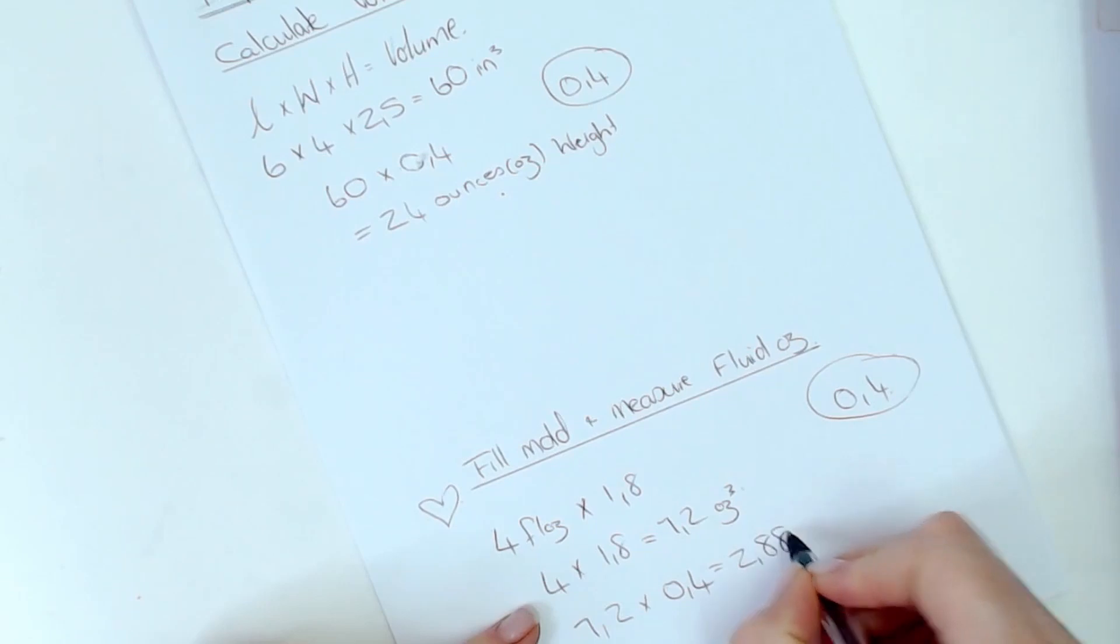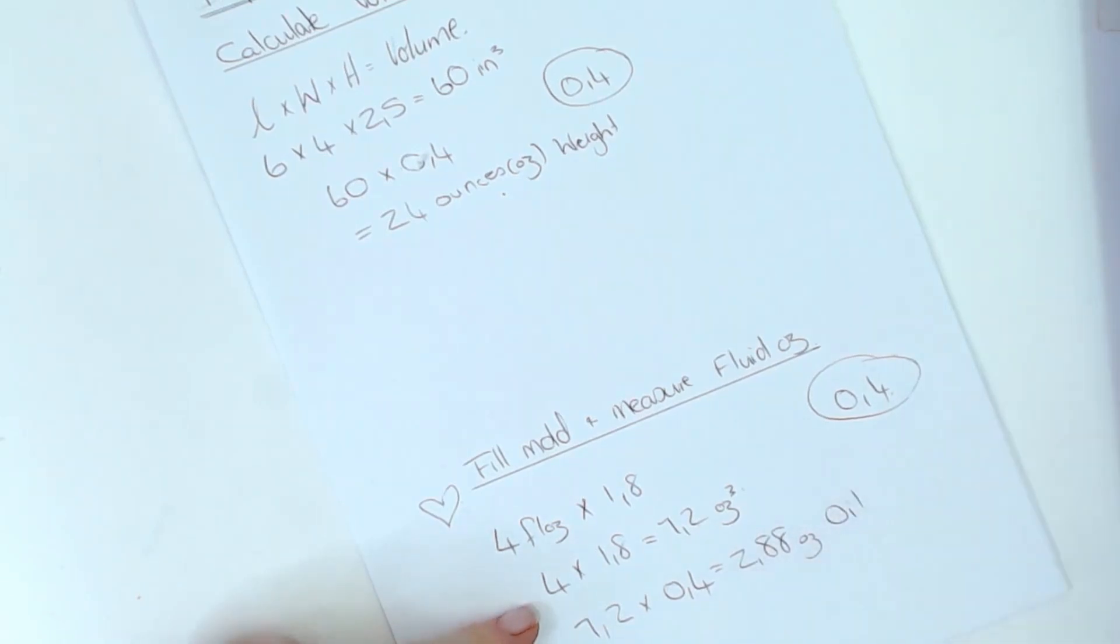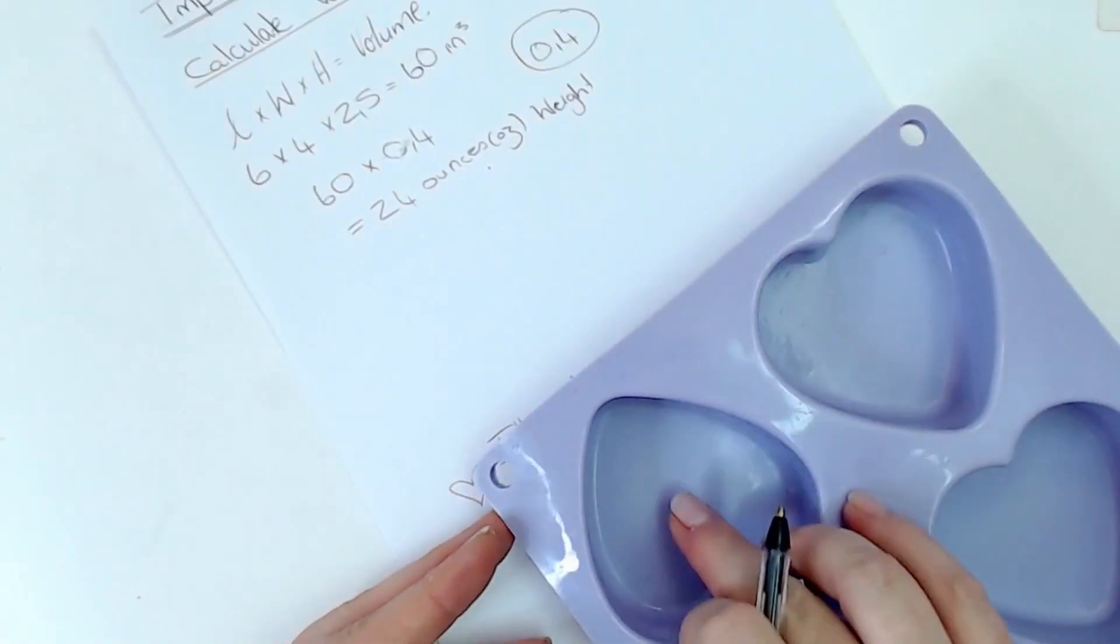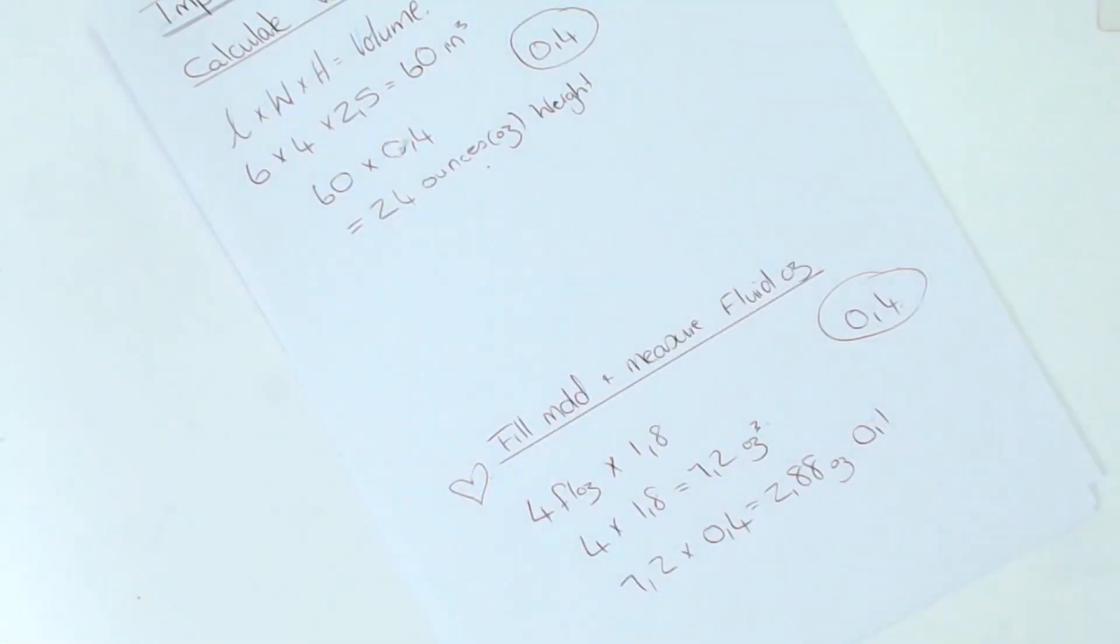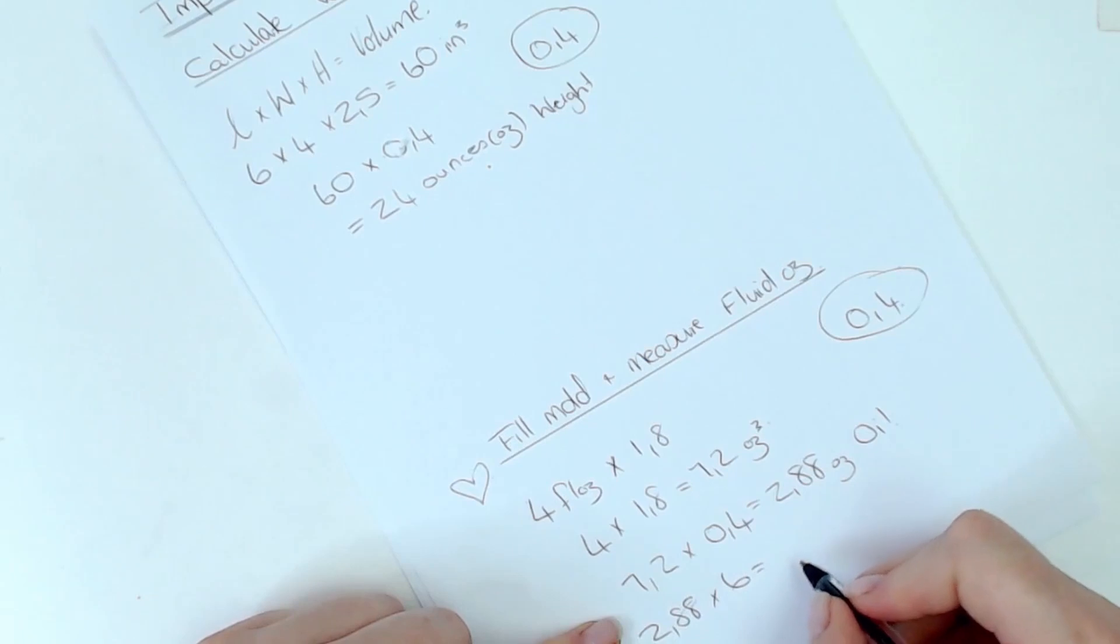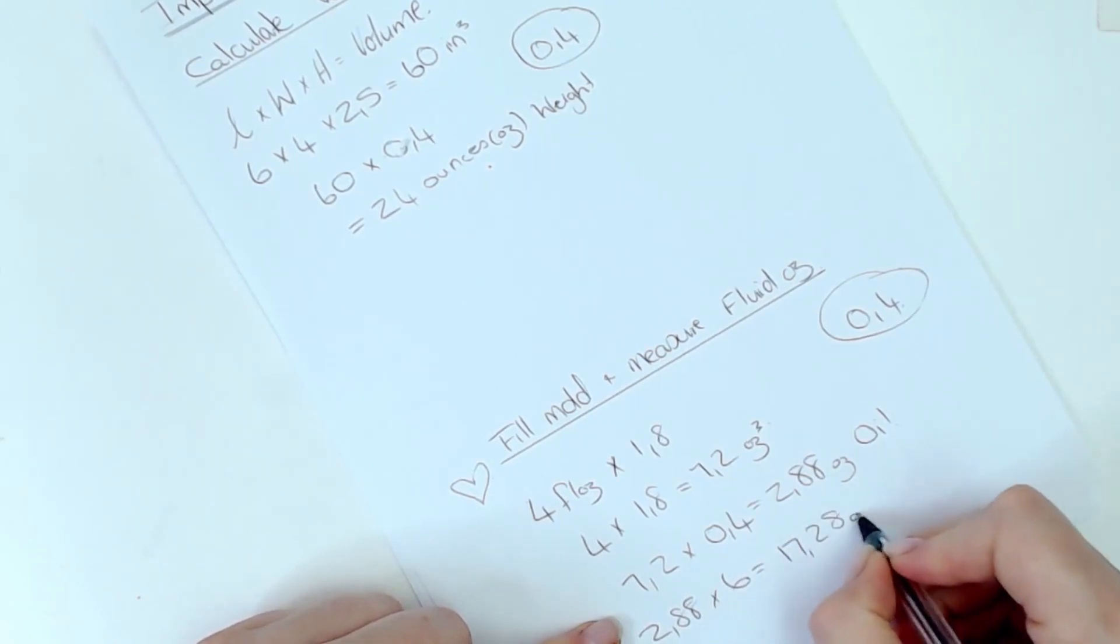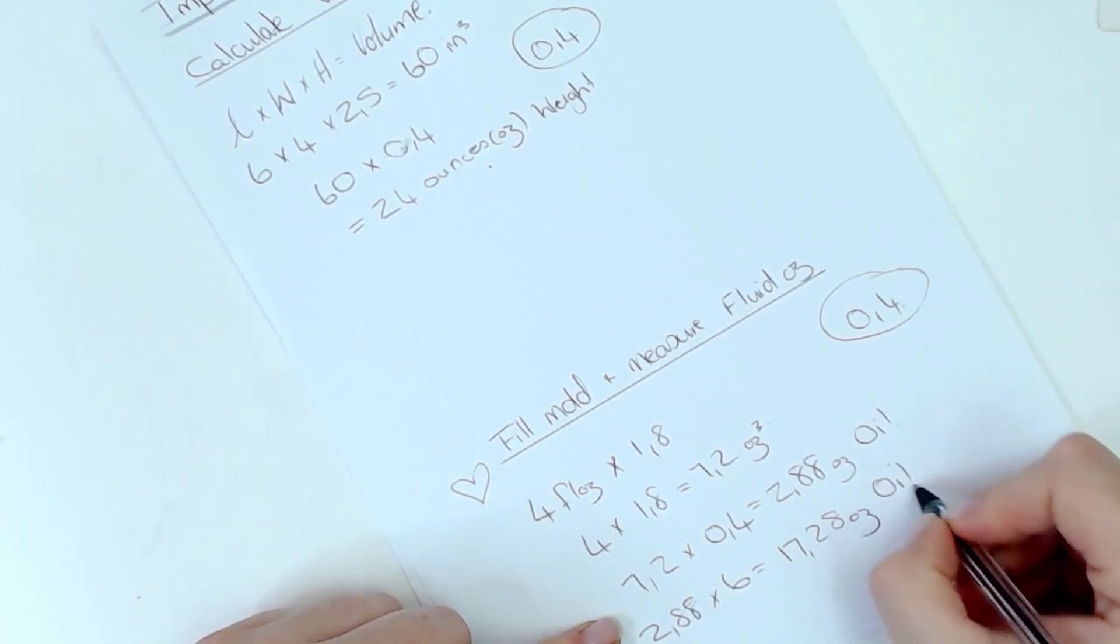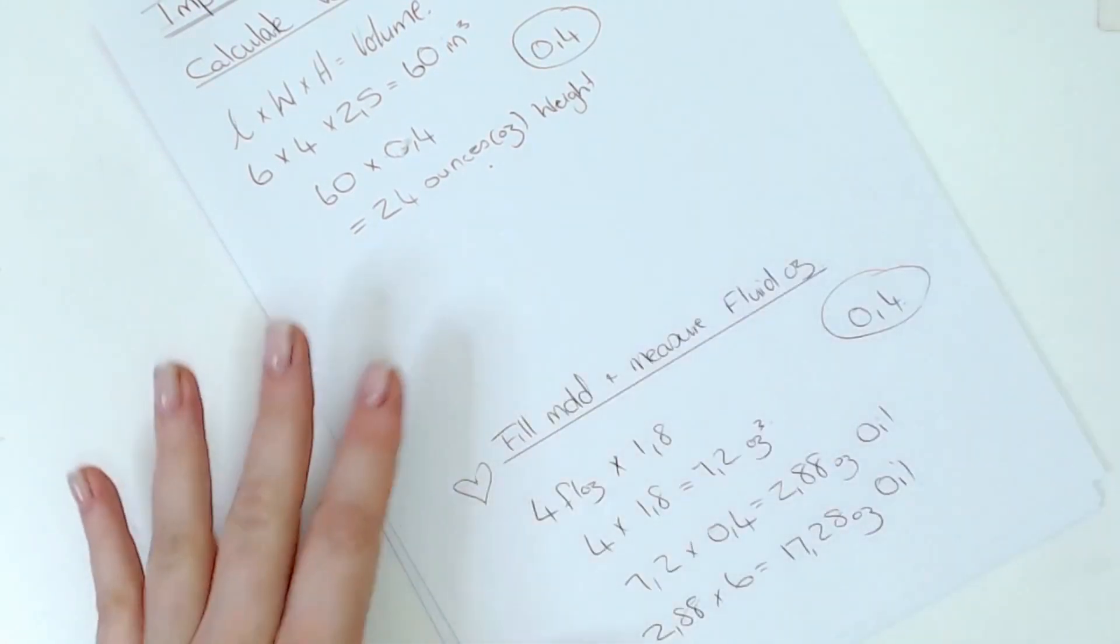Now remember there's six cavities here, so you're going to take the 2.88 times six, and that is going to give you 17.28 ounces of oil to fill these six cavities.